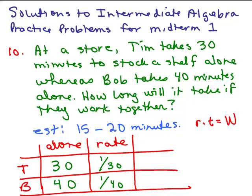So in other words, if Tim worked for 15 minutes, he'd get half done, and that's the next thing we're going to do is put how long they're each going to work, which will be their time. And the problem is that's what we're trying to find.